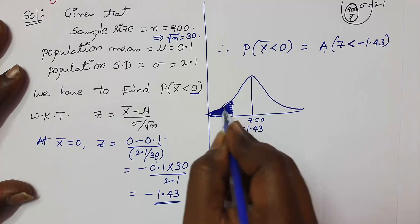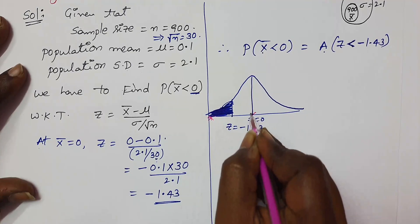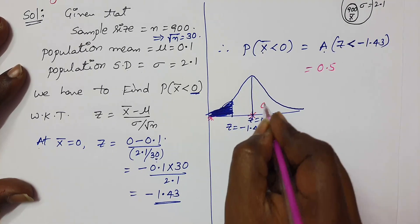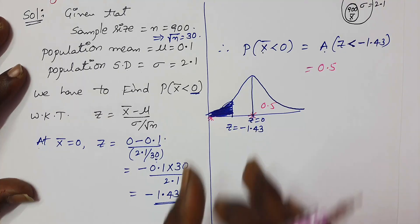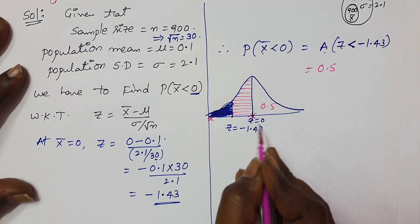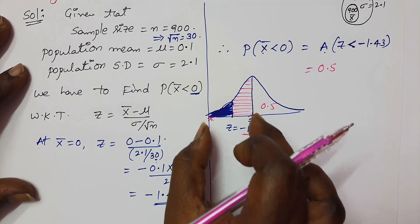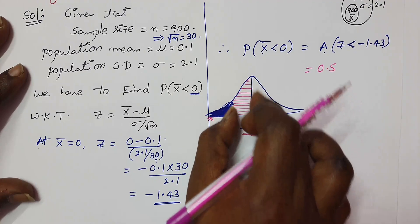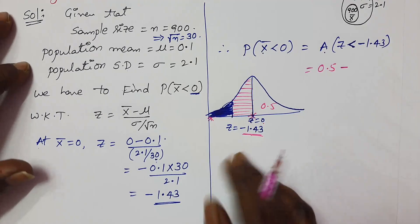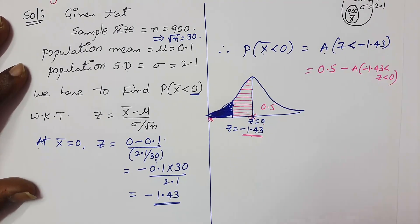So how to find out this small area? We know the entire left side area as 0.5, either left side area, or the entire right side area is 0.5. So from entire left side area, you should subtract this small area. What is this small area? From 0 to negative 1.43. I am subtracting from entire left side area, this pink shade area, so you will get this small area. So minus what is area from minus 1.43 to 0.